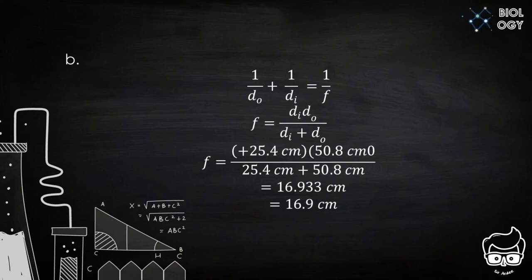For letter B, we can use the equation 1 over D sub O plus 1 over D sub I equals 1 over F. F equals D sub I multiplied by D sub O over D sub I plus D sub O. So, substituting its values, F equals positive 25.4 cm multiplied by 50.8 cm over 25.4 cm plus 50.8 cm, which gives us the answer 16.933 cm or approximately equal to 16.9 cm.